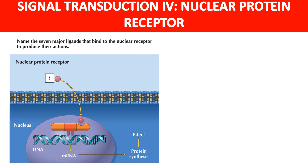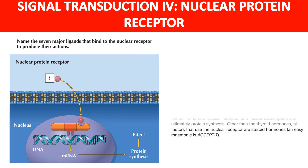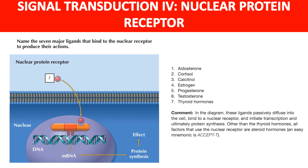Nuclear protein receptors: name the 7 major ligands that bind to nuclear protein receptors. The 7 ligands are aldosterone, cortisol, calcitriol, estrogen, progesterone, testosterone, and thyroid hormone. These ligands passively diffuse into the cell, bind to a nuclear receptor, and initiate transcription and ultimately protein synthesis. Other than thyroid hormone, all factors that use nuclear receptors are steroid hormones. An easy mnemonic to remember is EXCEPT T.